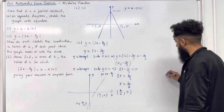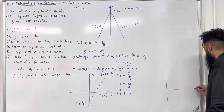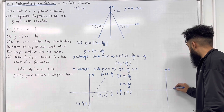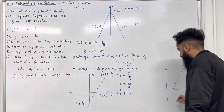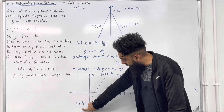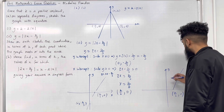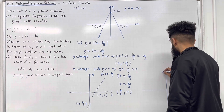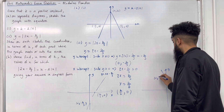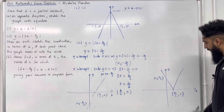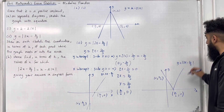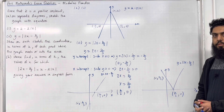The modulus graph is plotted on new axes. The x-intercept remains at (k/6, 0). The y-intercept, which was at −k/3, is now reflected to become (0, k/3). This gives us the graph of y = |2x − k/3|. This completes part A, part 2 of the exam question.